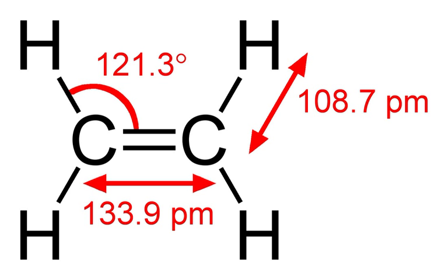Ethylene is biosynthesized from the amino acid methionine to S-adenosyl-L-methionine (SAM), also called adoMet, by the enzyme methionine adenosyltransferase. SAM is then converted to 1-aminocyclopropane-1-carboxylic acid (ACC) by the enzyme ACC synthase. The activity of ACS determines the rate of ethylene production; therefore regulation of this enzyme is key for ethylene biosynthesis.